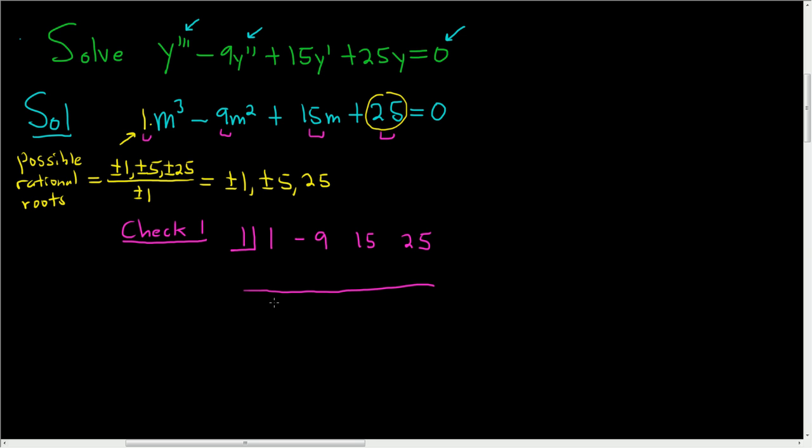So 1, 1 times 1 is 1, and then you add, so you get negative 8. And then negative 8 times 1 is negative 8, and then you add, so you get 7. 7 times 1 is 7. Oh no, we got 32. So 1 is not a root.